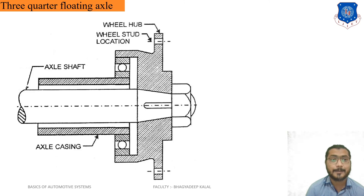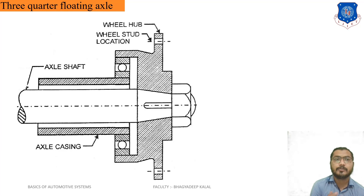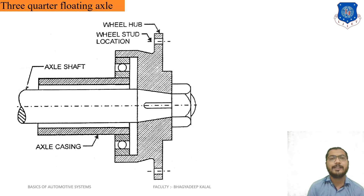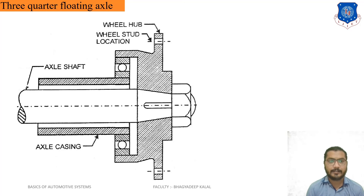Before the 1990s, three-quarter floating axles were popular and widely used. However, due to changes in design, materials, and size reduction, three-quarter floating axles were replaced again by semi-floating axles. Nowadays, three-quarter floating axles are not used in any vehicles. For light vehicles, commercial vehicles, and cars, semi-floating axles are used.